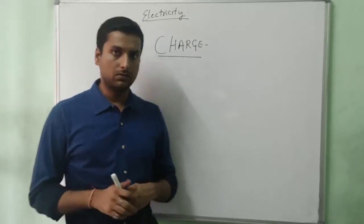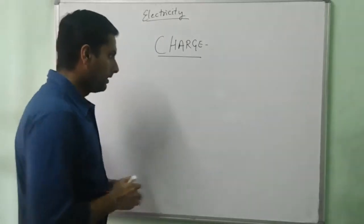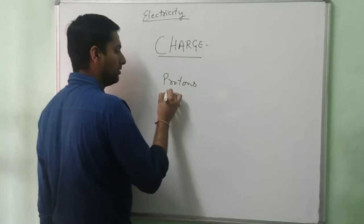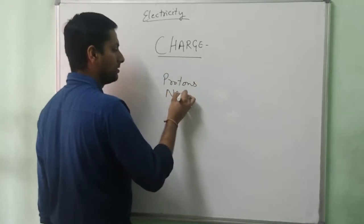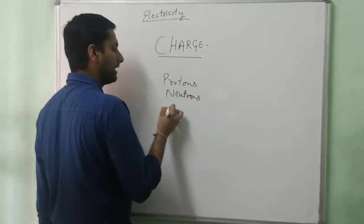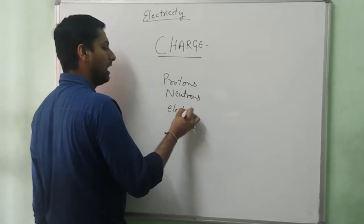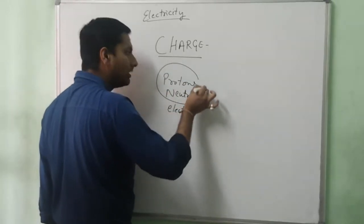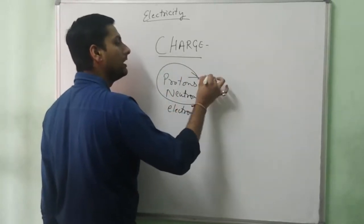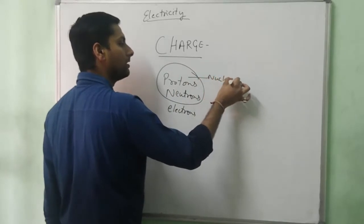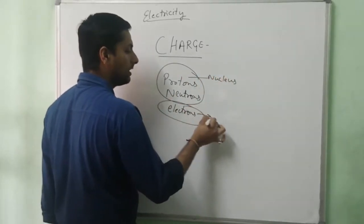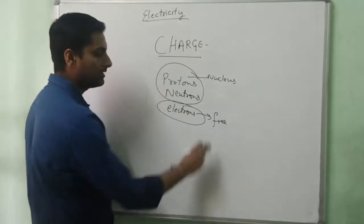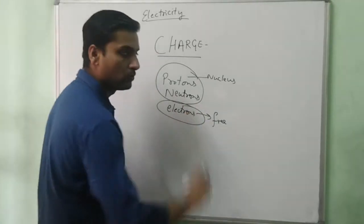What does the atom consist of? The atom consists of protons, neutrons, and electrons. Out of which protons and neutrons are in a bounded state in the nucleus of an atom, and electrons are in a free state in orbits — that is, they are free to move in orbits.